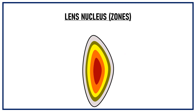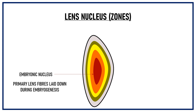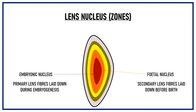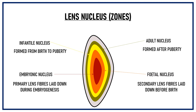Nucleus forms about 84% of the total lens fibers. The lens nucleus can be further subdivided into 4 zones based on the stage of life when these lens fibers were formed. In the innermost part of the lens lies the embryonic nucleus — it consists of primary lens fibers laid down during embryogenesis, so these are the oldest fibers of the lens. Surrounding the embryonic nucleus is the fetal nucleus, which consists of secondary lens fibers laid down before birth. Fibers formed from birth to puberty make the infantile nucleus, and fibers formed after puberty make the adult nucleus.